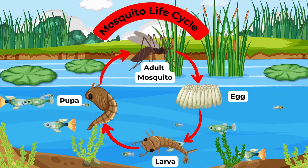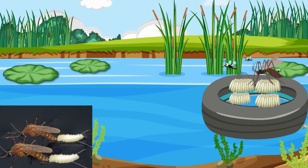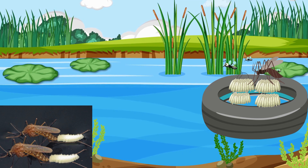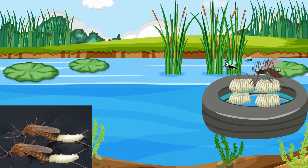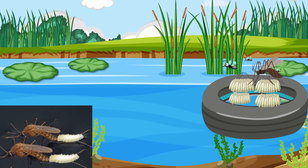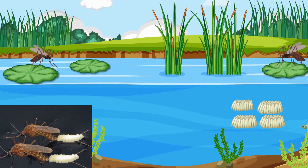Stage 1: Eggs. Mosquitoes lay their eggs on the surface of water. The eggs are tiny and float together in a group called a raft.